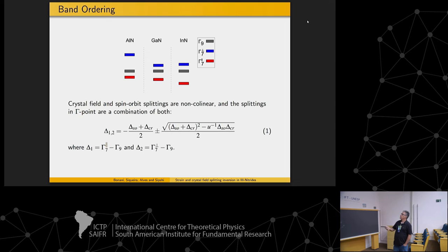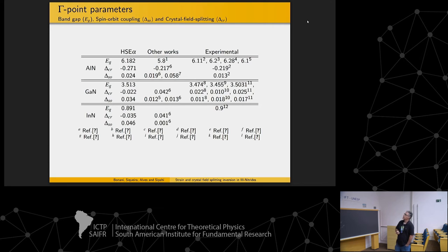So we have to have a way to find these parameters in order to combine them, and we can use this formula here. And with this formula, we define delta-1 as the difference of gamma-7 parallel and gamma-9. Delta-2 is gamma-7 perpendicular to gamma-9. And using this we can calculate these deltas.